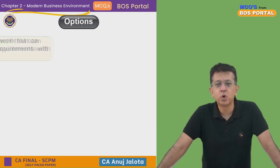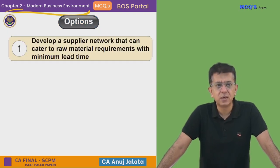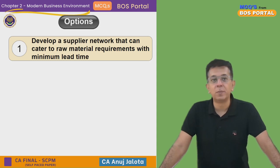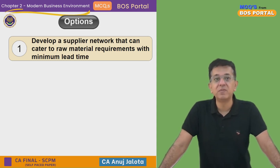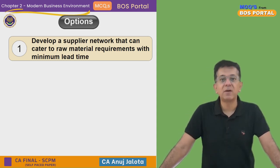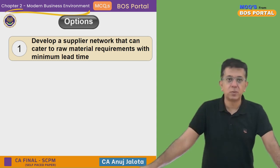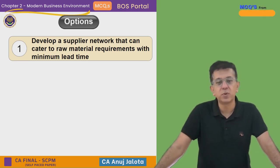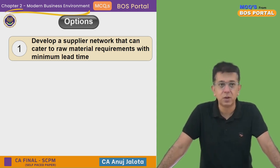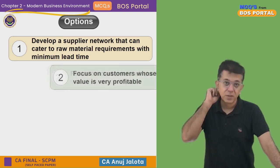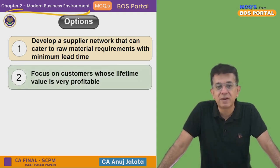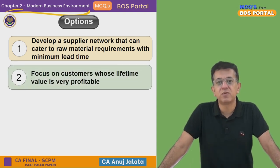The four options are: Option A — develop a supply network that can cater to raw material requirements with a minimum lead time, meaning try to have a supplier network that supplies material so you can get it as fast as possible. Option B — focus on customers whose lifetime value is very profitable.